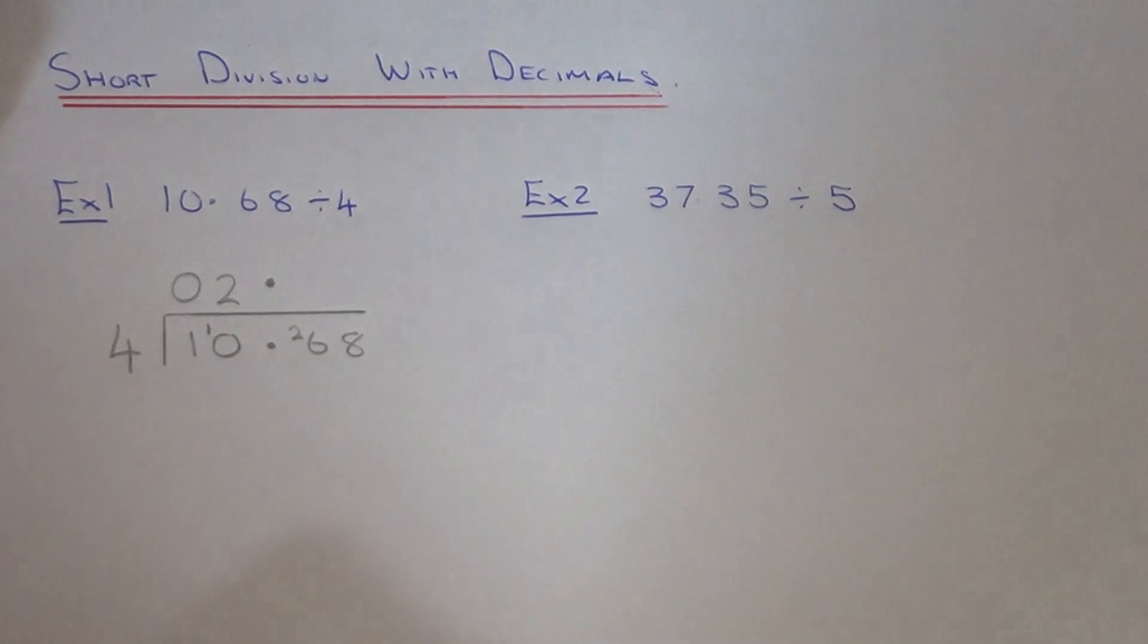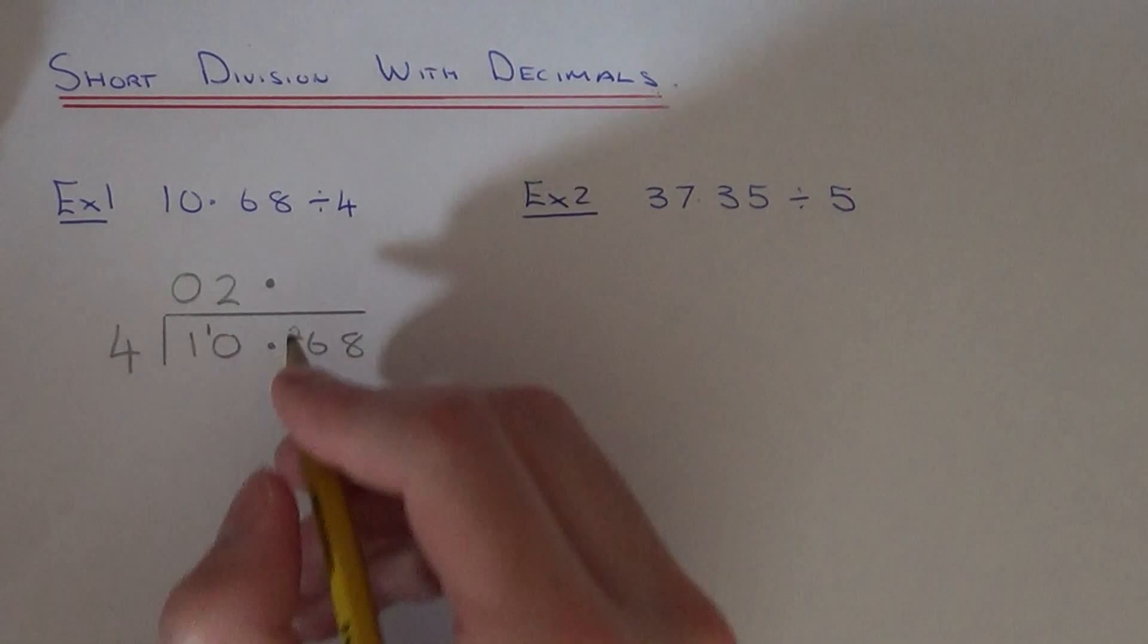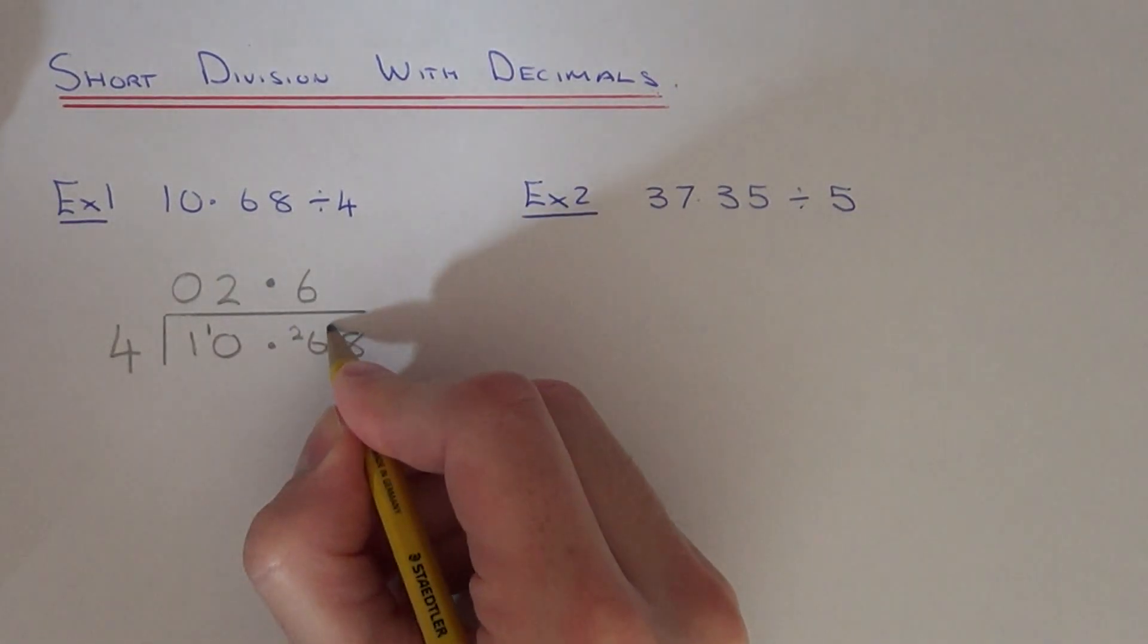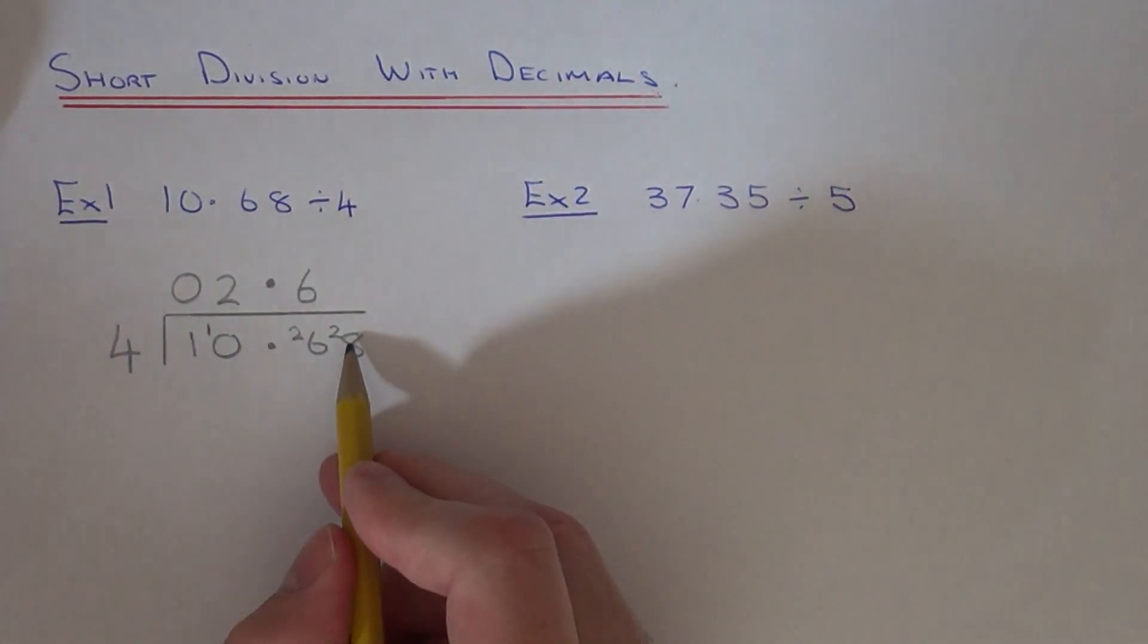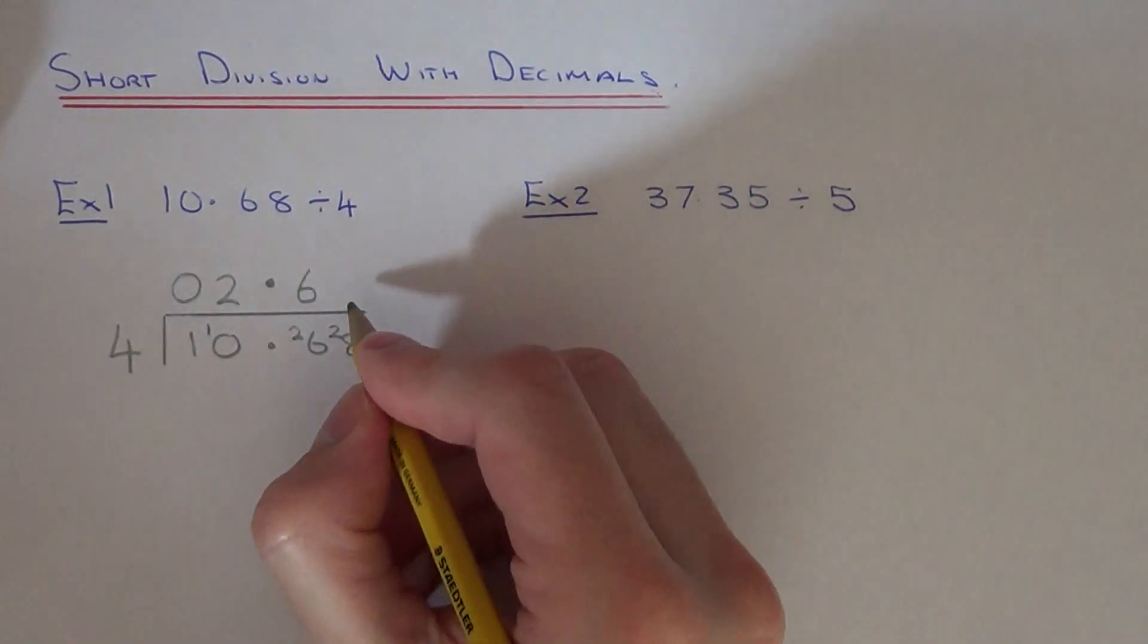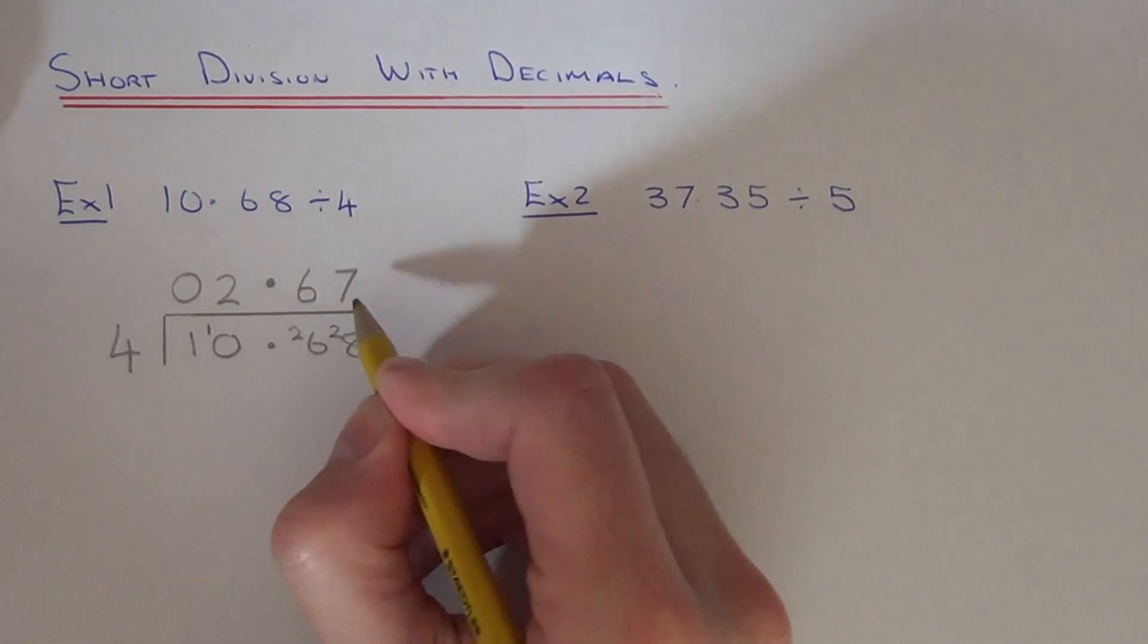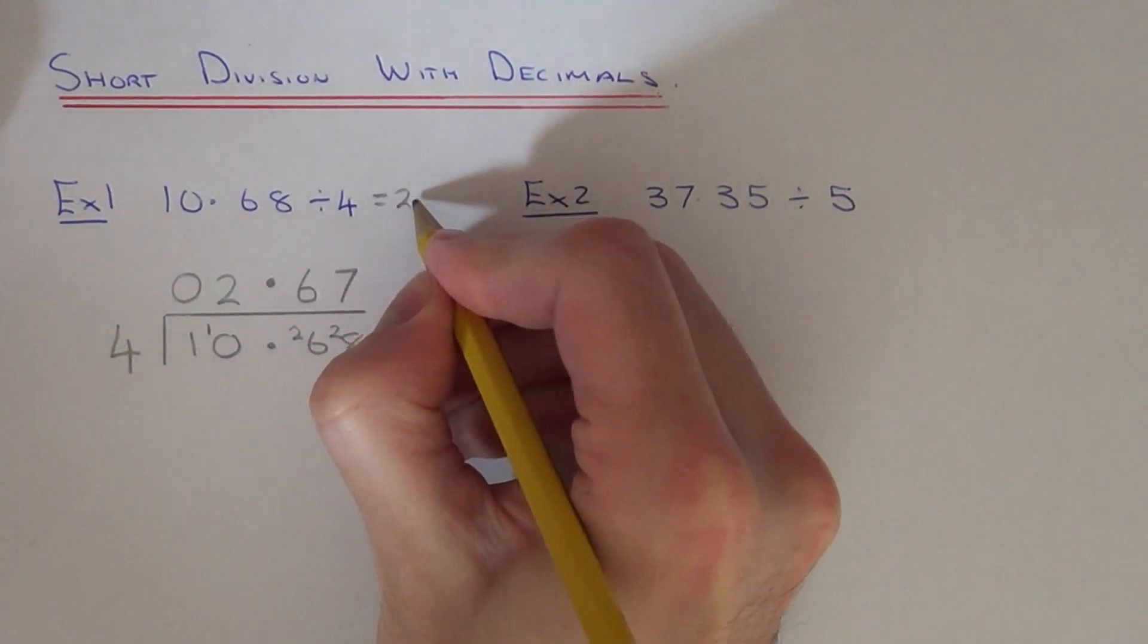Carry that by the next number. Then you've got 26 divided by 4. That is 6 with a remainder of 2. Finally you've got 28 divided by 4 which is 7. So your final answer is 2.67.